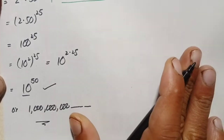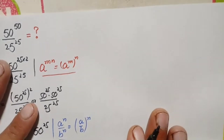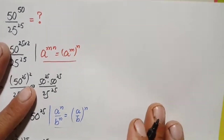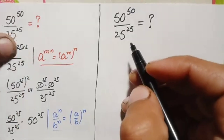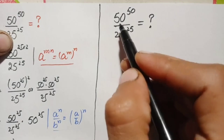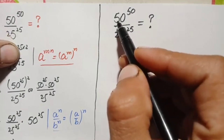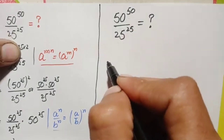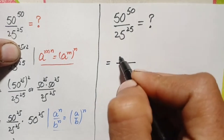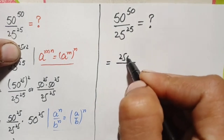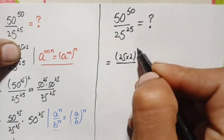Now we will solve this problem using the second method. In the second method, we will try to make the bases the same. For that, we will factorize the base 50 as 25 times 2, so the numerator becomes 25 times 2, all raised to power 50, divided by 25 raised to power 25.